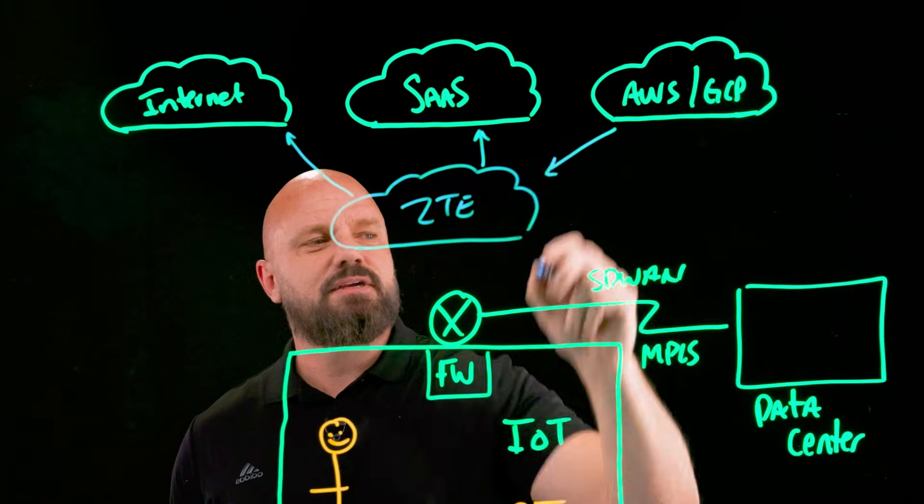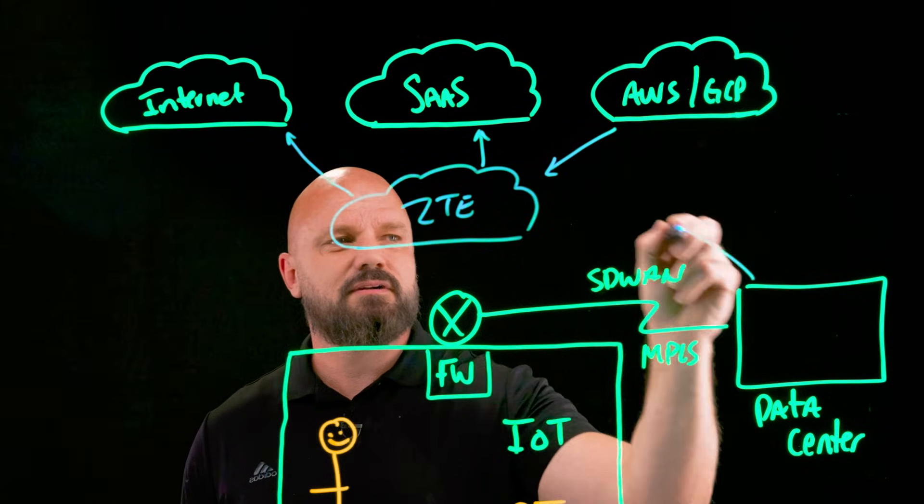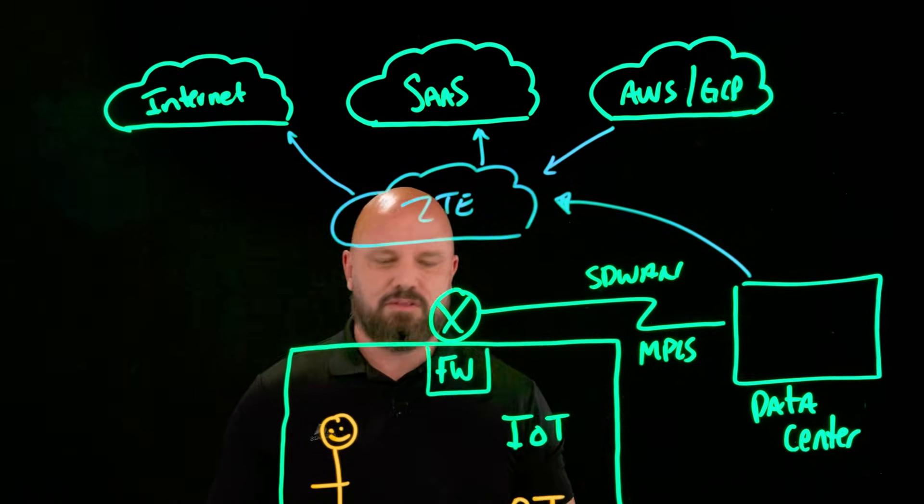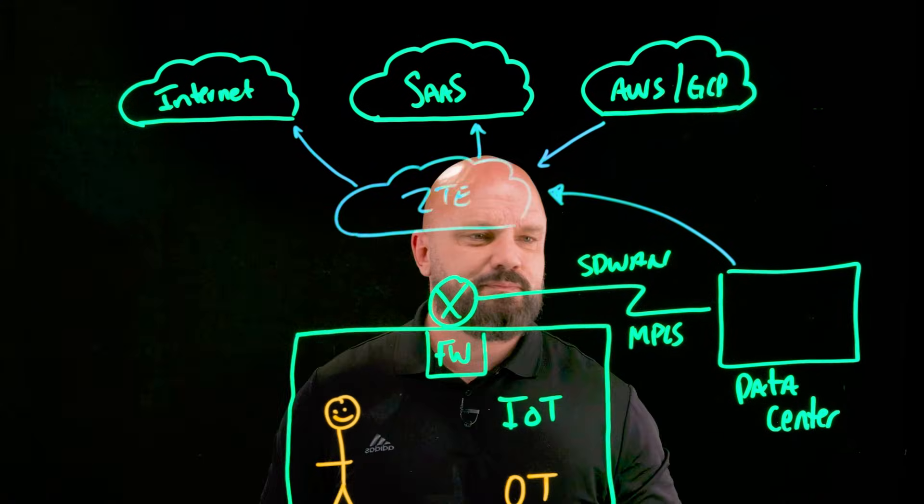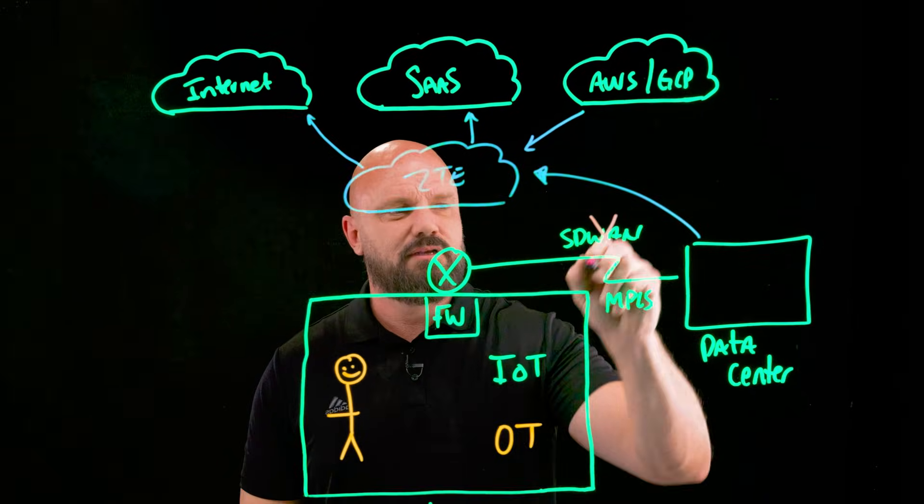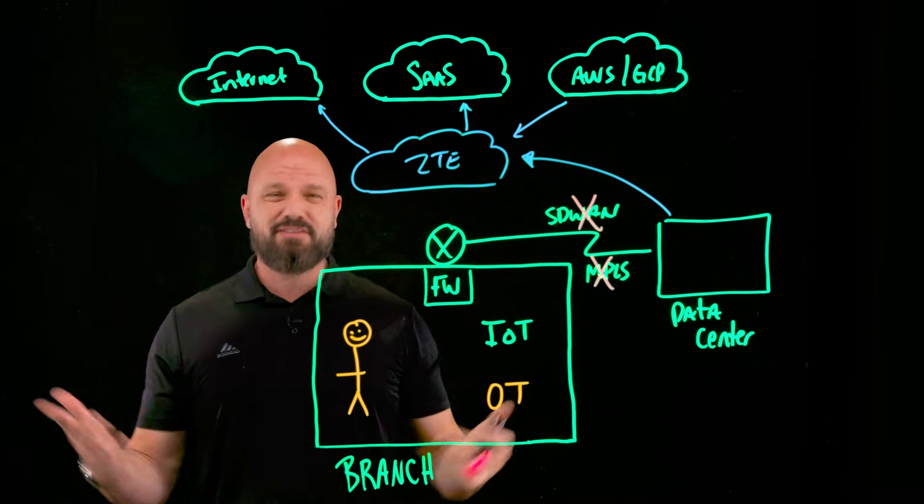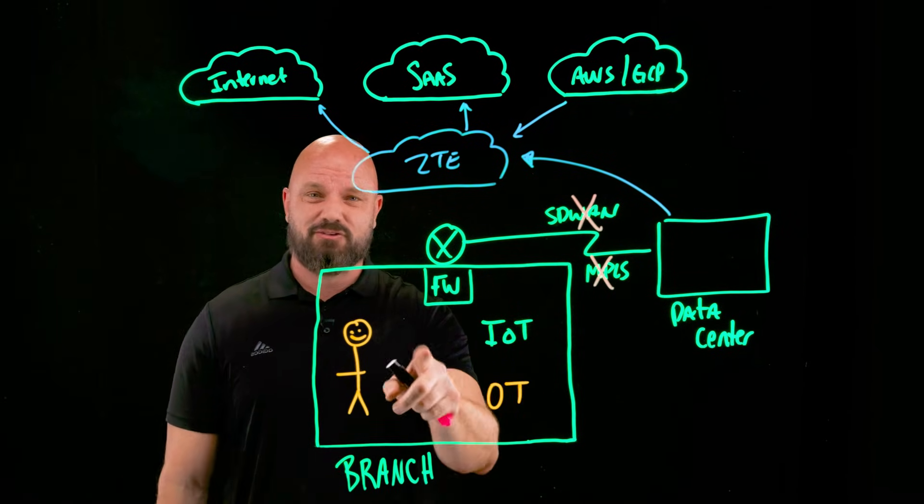And then we just have connectivity going over here. Same thing, back over at the data center, look up my videos on ZPA. But as we focus on the branch, one of the biggest things we want to do is get rid of MPLS or SD-WAN because it's not Zero Trust. In fact, it's implicit trust.